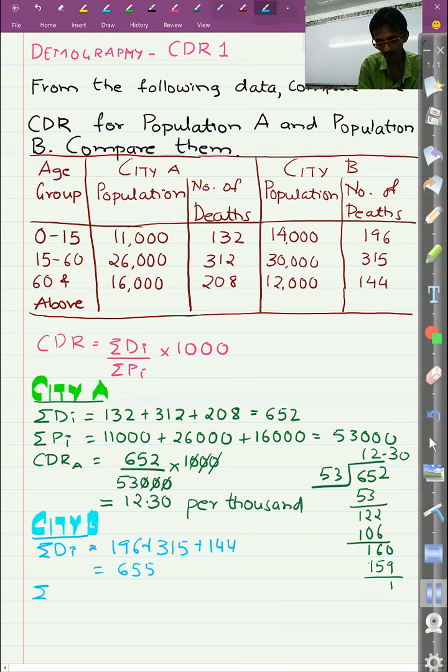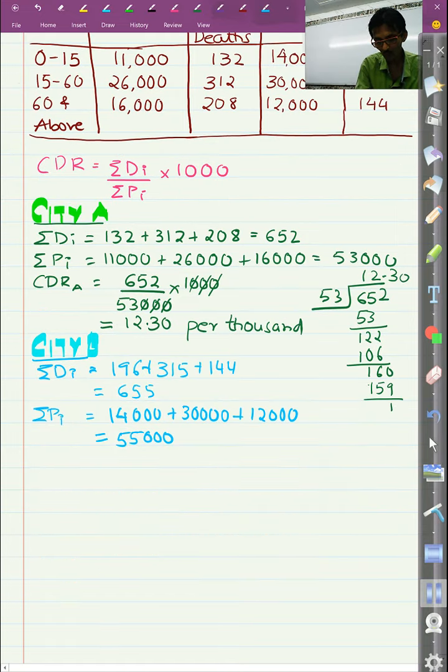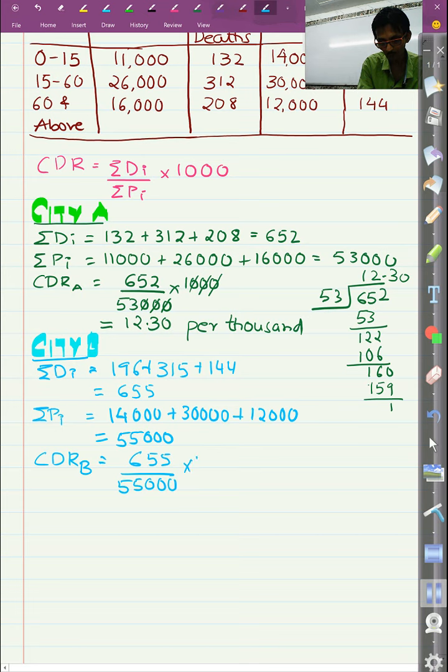Summation PI will be equal to 14000 plus 30000 plus 12000 that would be equal to 55000. So CDR for City B will be total deaths upon total population into 1000. We cancel the three zeros.